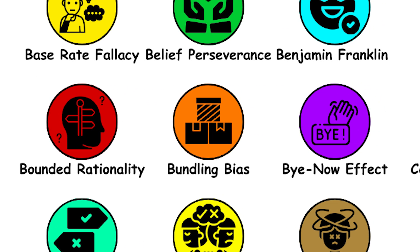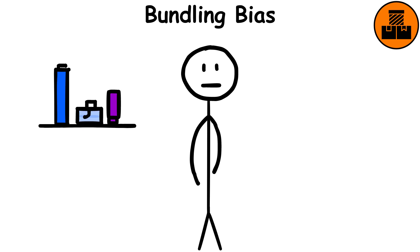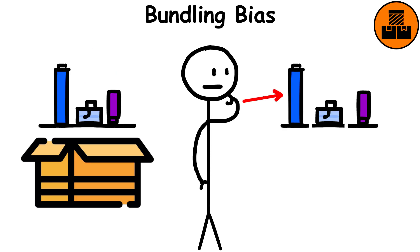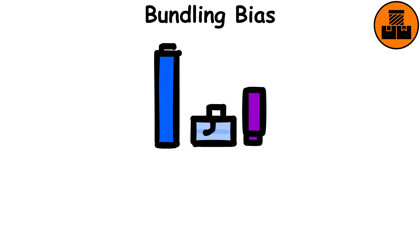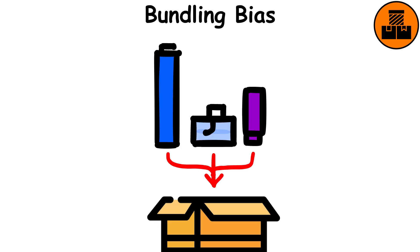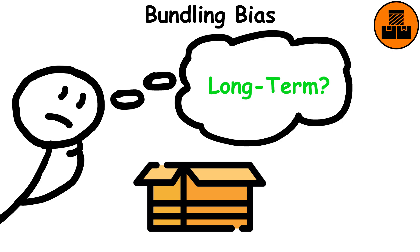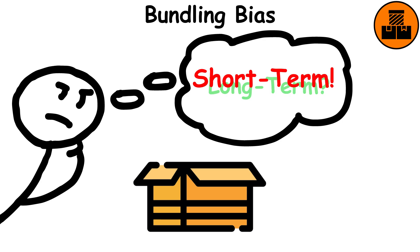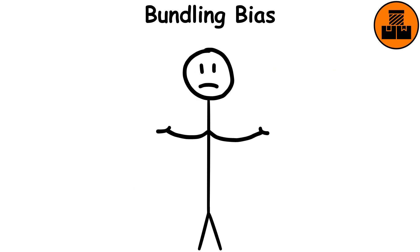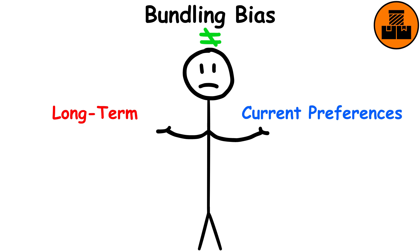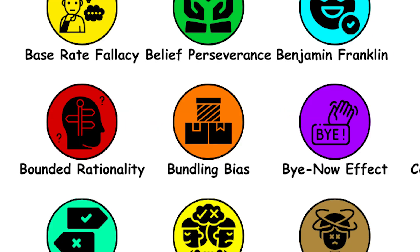Bundling bias. This describes the fact that we are less likely to use up all the items that we purchase in a bundle compared to if we individually purchase those items. When items are sold as a bundle, consumers are asked to make a decision on what they might want long-term based on their short-term preferences. Often our long-term desires don't actually align with our current preferences, known as the projection bias.